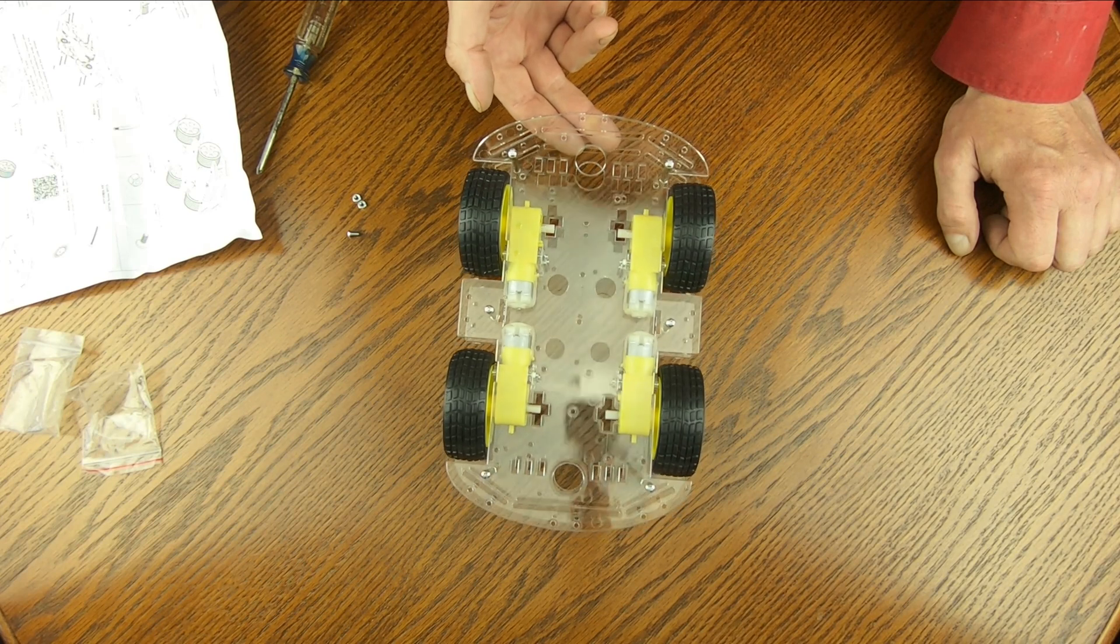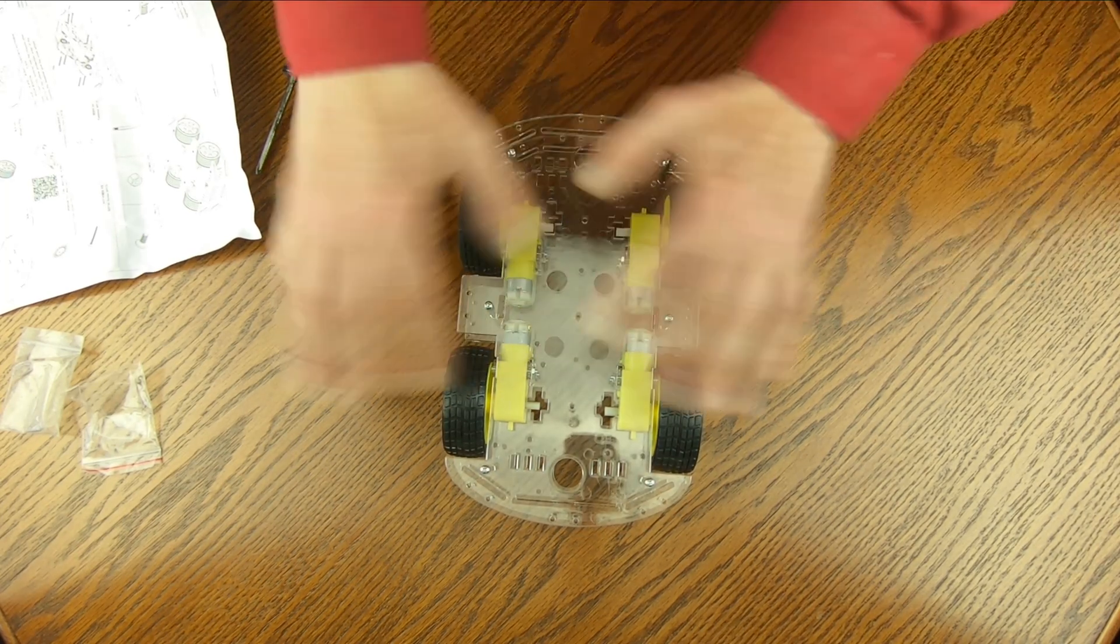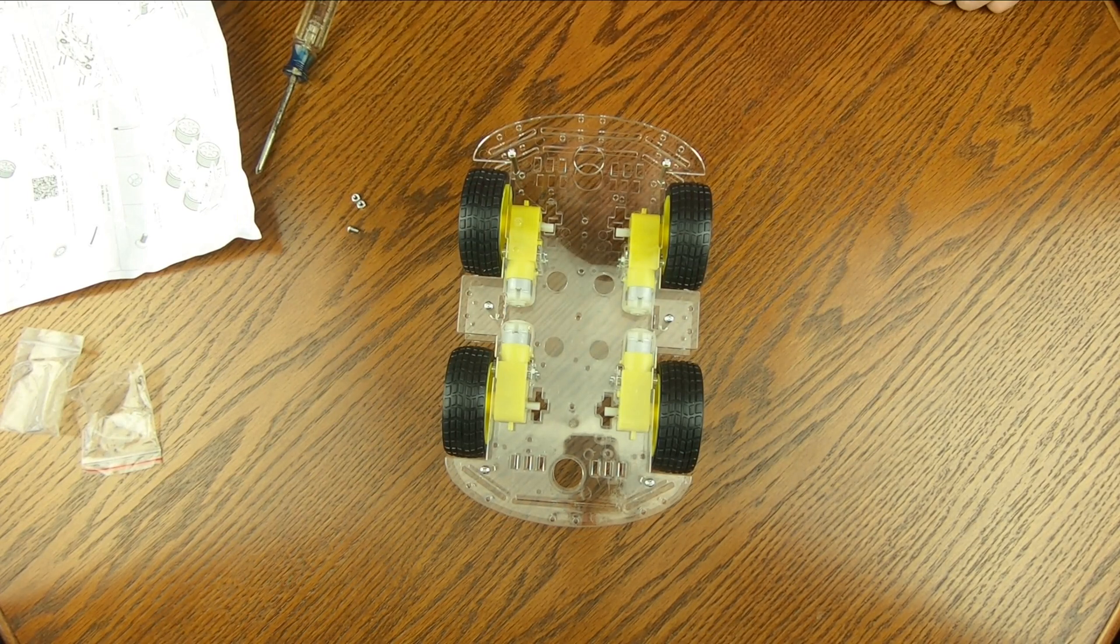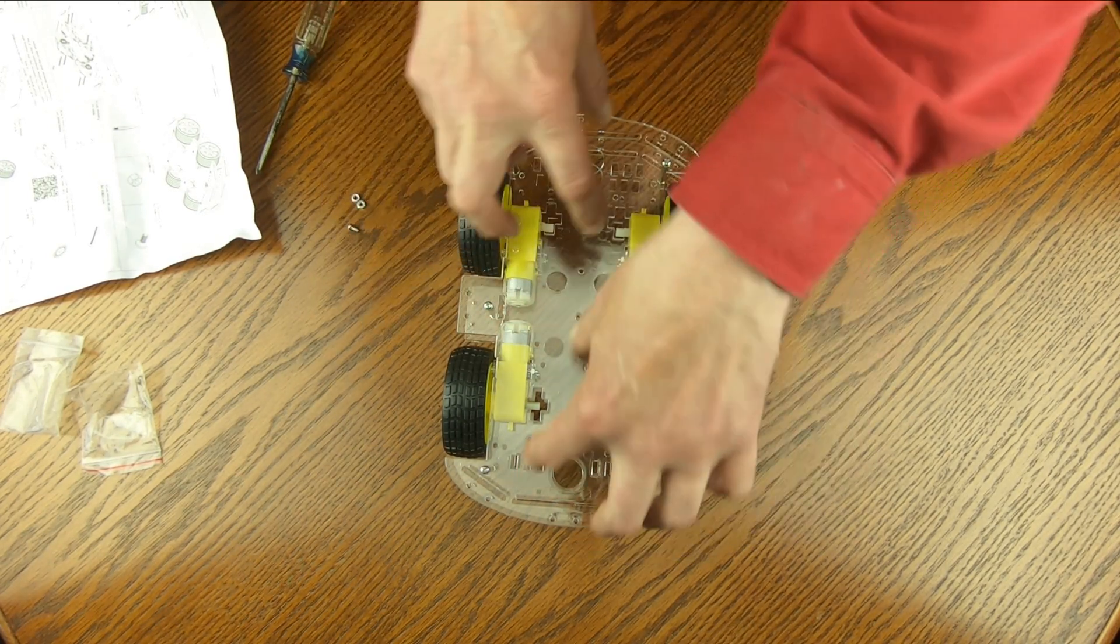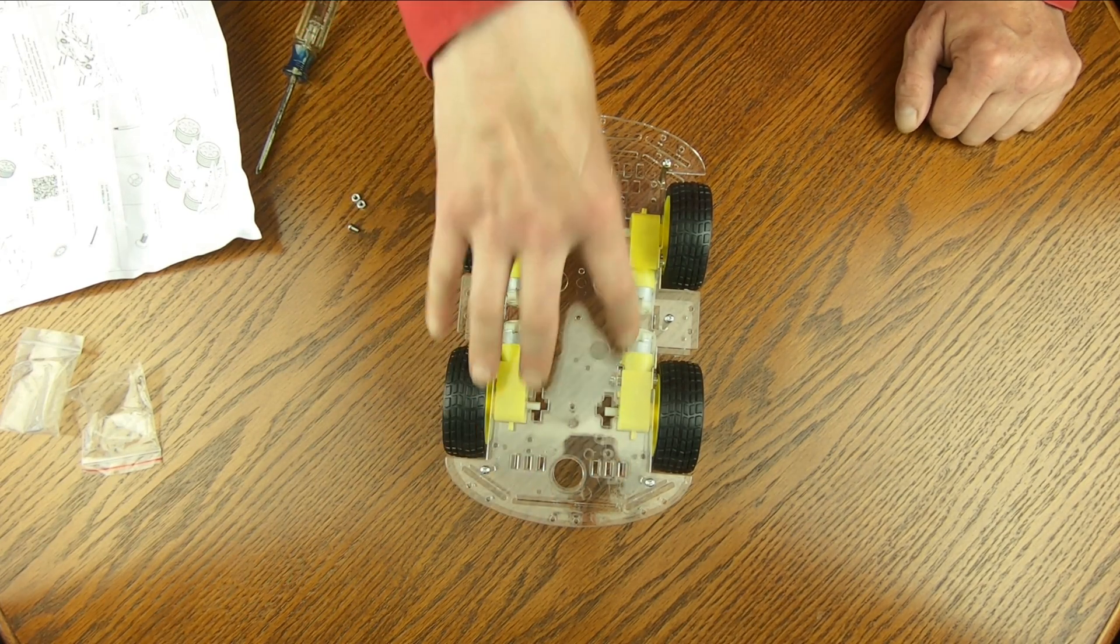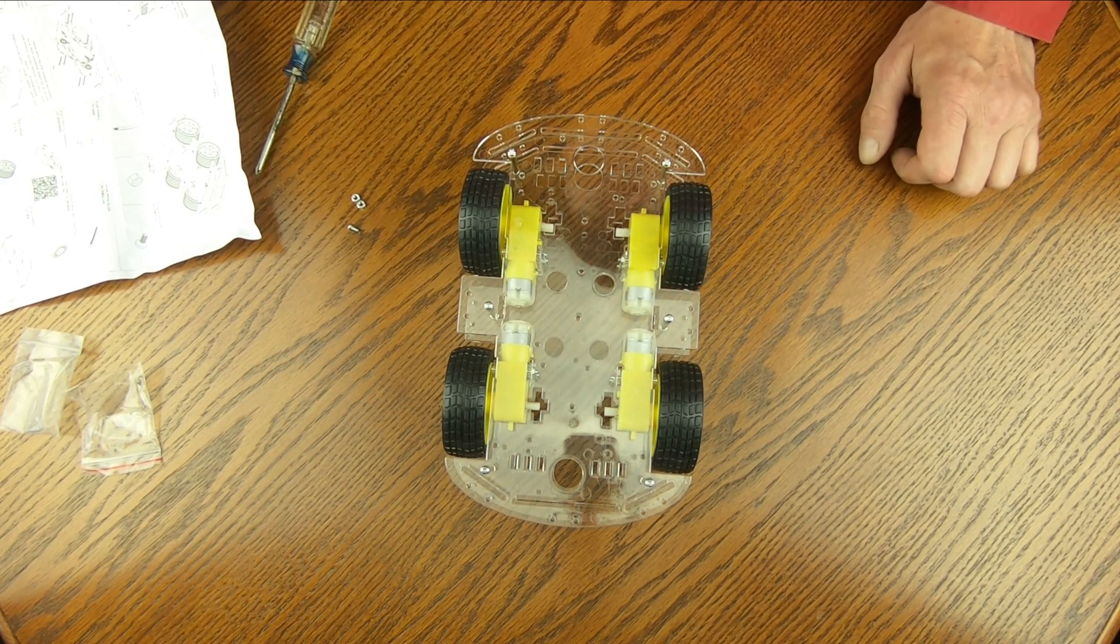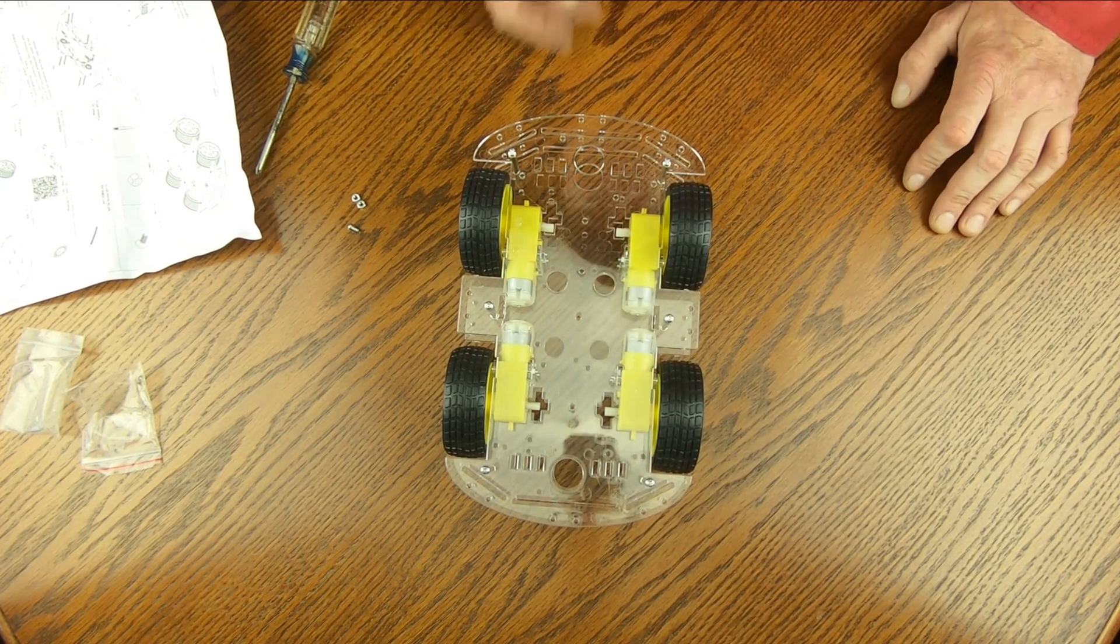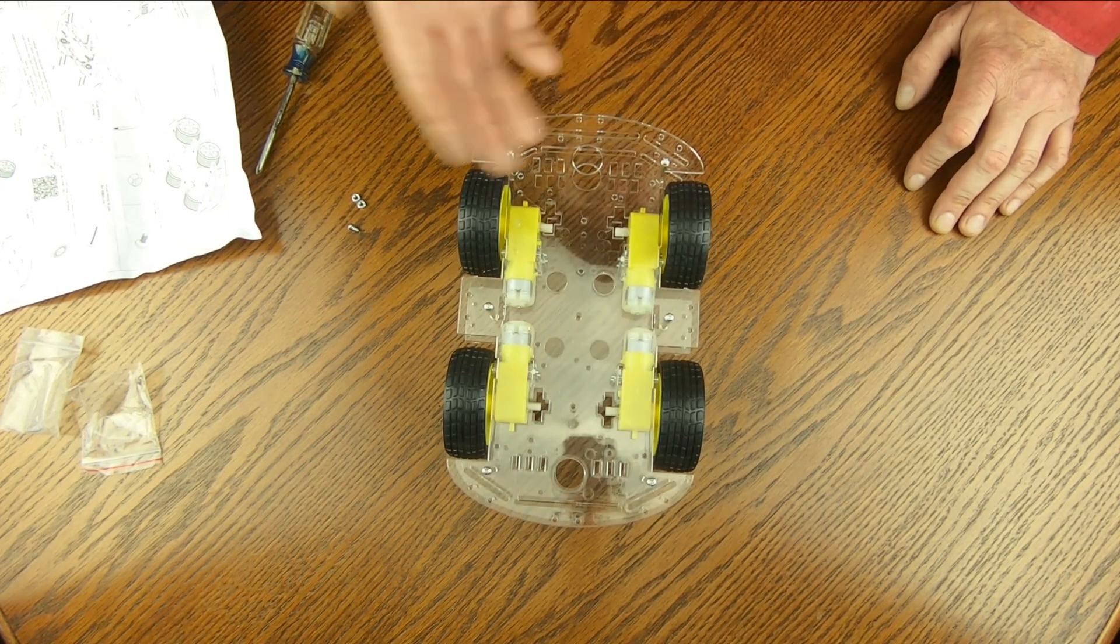To get this apart, to put the Arduino stuff in, I don't have to take absolutely everything apart. I just take these top six screws out and the top cover will lift off. And I'm going to be using a Nano and my battery pack. Everything should fit down in here. And my antenna can be stuck through there.